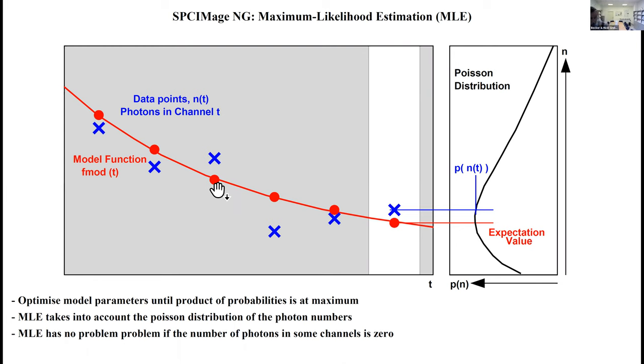The maximum likelihood estimation takes into account that the photon numbers are Poisson distributed. In particular, it has no problem if the photon number is low. It even has no problem if the photon number in some channels is zero, because there's always a non-zero probability of the photon number of zero in the Poisson distribution.